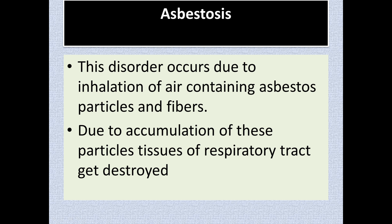Another disease associated with the respiratory system is asbestosis. You know asbestos sheets — we use them for making ceilings or roofs. Asbestos is made by compressing cement particles and other kinds of fiber particles together; it is a composite material. When asbestos fibers and dust are inhaled and get into the lungs, you develop a condition called asbestosis. These asbestos particles accumulate in the lungs and respiratory tract, the tissues get destroyed, and the lung's respiration capacity decreases.